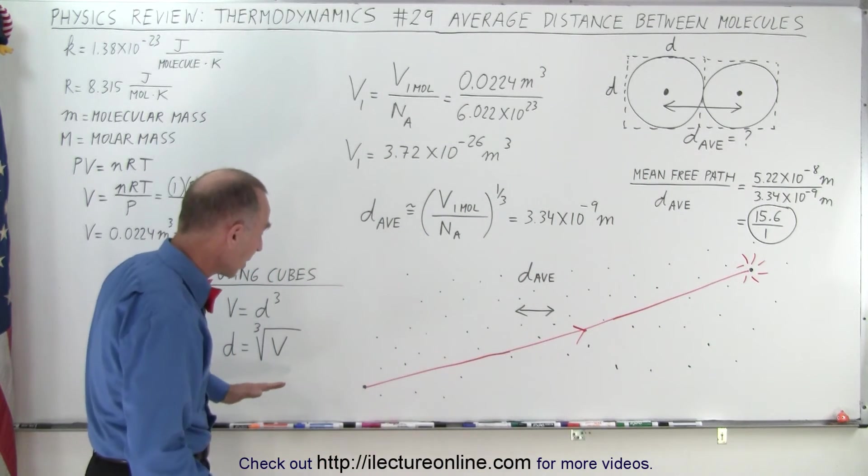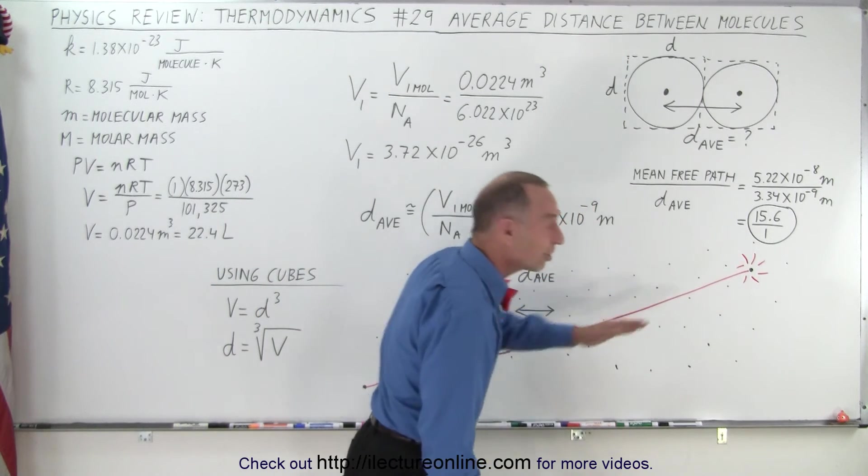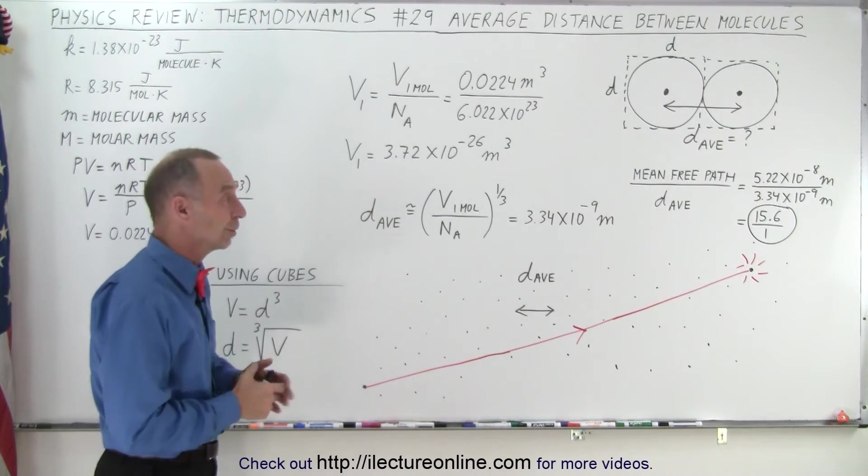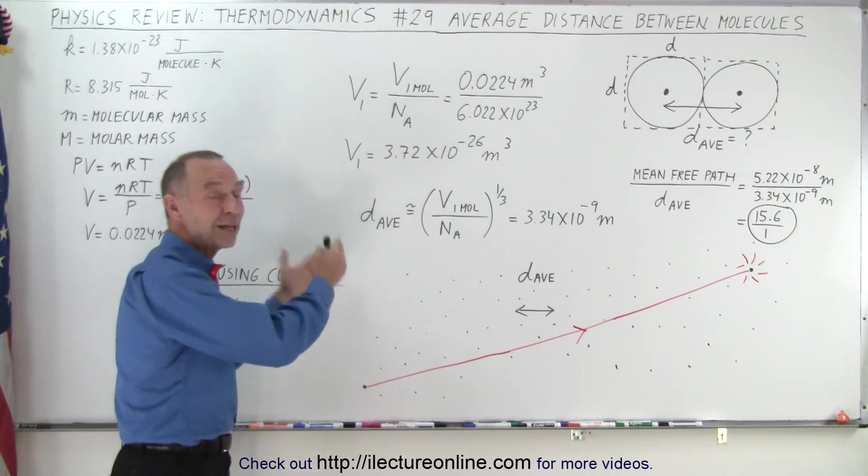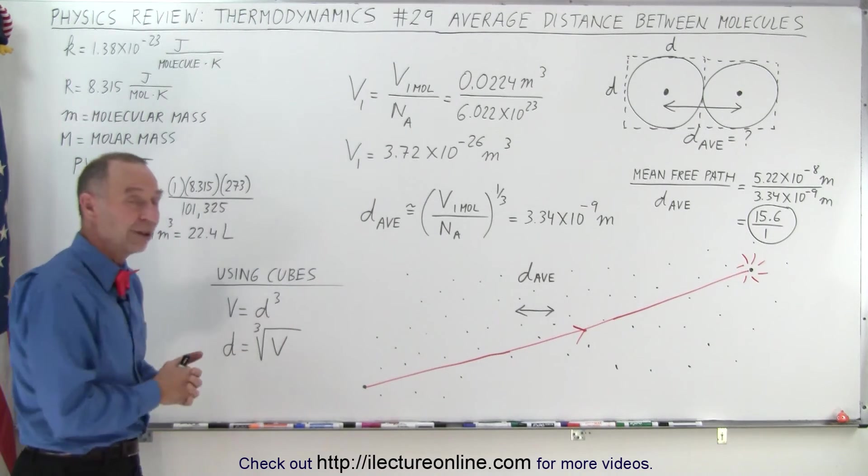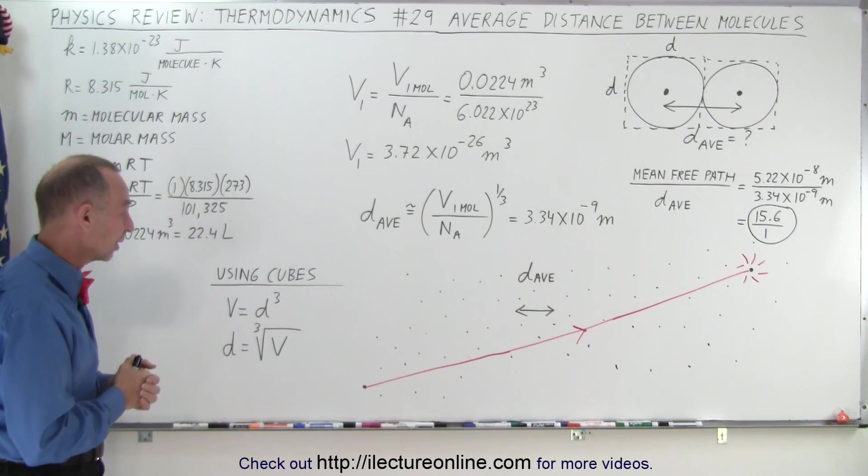Which means that a molecule travels a little bit more than 15 times the distance between molecules before it collides with another molecule. Now that is, in this particular case, under STP conditions. For other molecules, of course, it may be somewhat different—different temperature, different pressure, you'll get a different result as well.